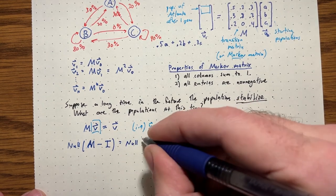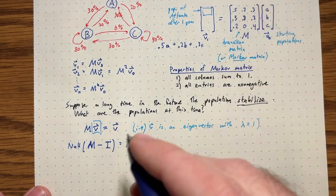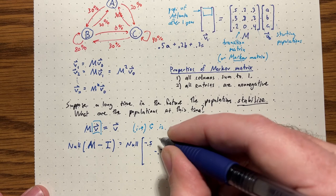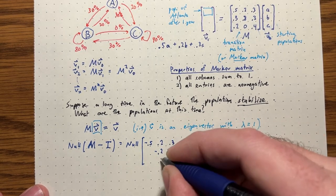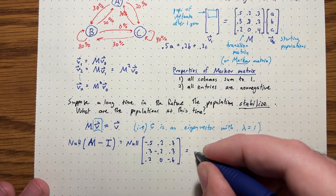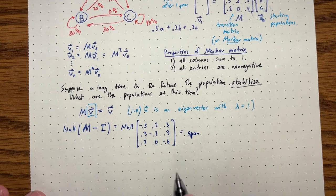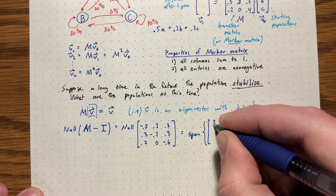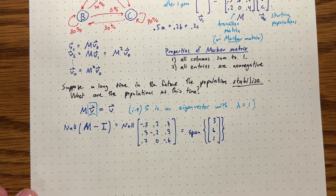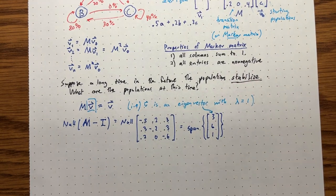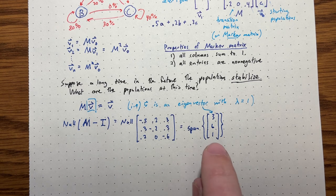This amounts to solving a system of equations. In general, for an eigenvector problem we look at the null space of M minus lambda times the identity - here lambda is one, so we look at M minus I. I subtract one off the diagonal, getting some negative numbers - negative 0.2, negative 0.6 - the others stay the same. If you solve for the solutions to this matrix times x equals zero, you get the span of the vector 3, 6, 1. That's the eigenvector for lambda equals one.